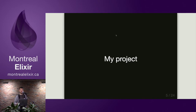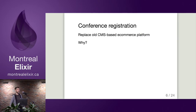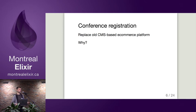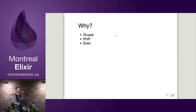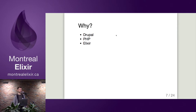I chose to use Phoenix for a project I was working on - a conference registration application for a series of small conferences. It was a CMS-based thing and wasn't the best fit. I was using Drupal, which is great if you want to use Drupal, but it wasn't a great fit. I'm not in love with PHP, and I saw something on Elixir about a year and a half ago and decided that would be a great way to go.